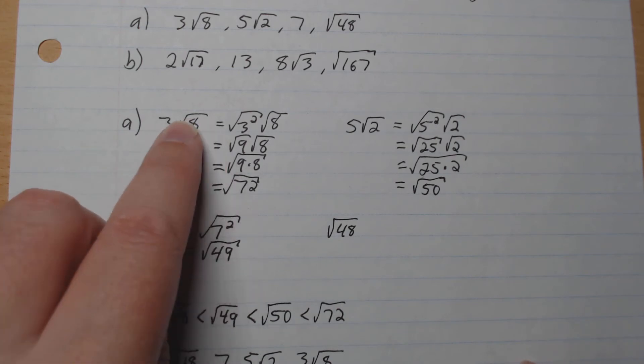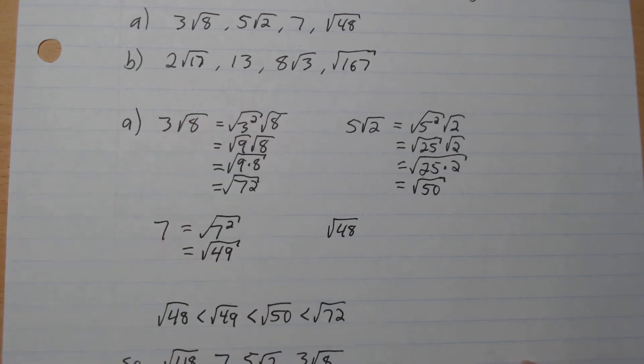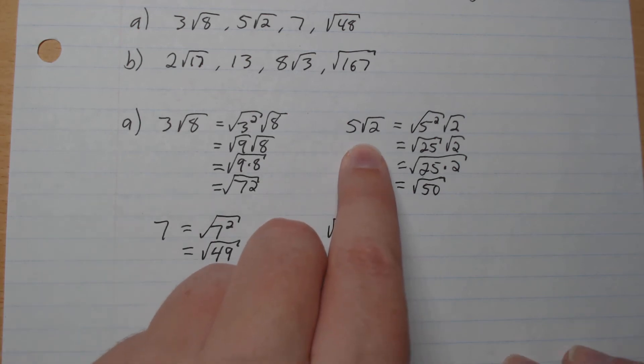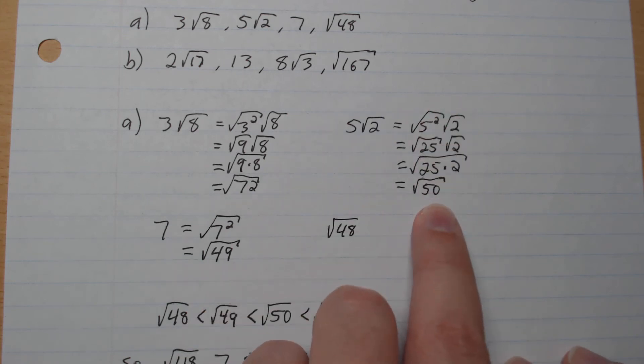So 3 root 8, so we've got square root, so we're going to go square square root like that, which gives root 72. 5 root 2, so 5 squared square root like that, which gives root 50. 7, we're going to go square square root to give root 49, and root 48 is already there.